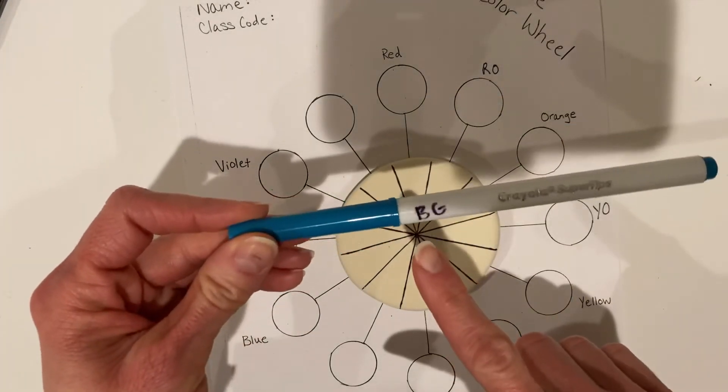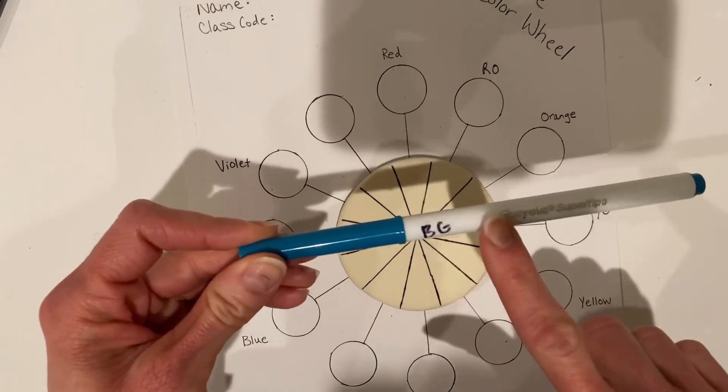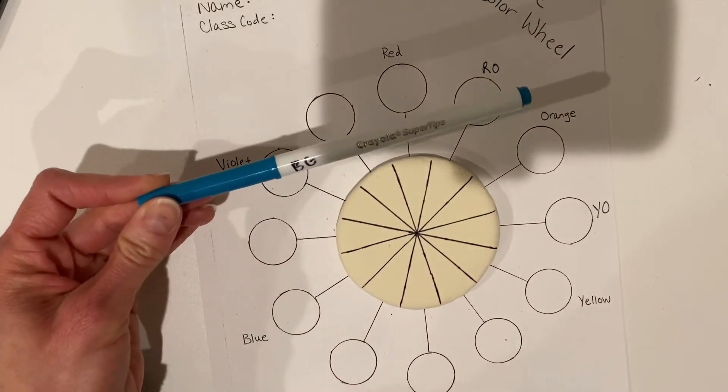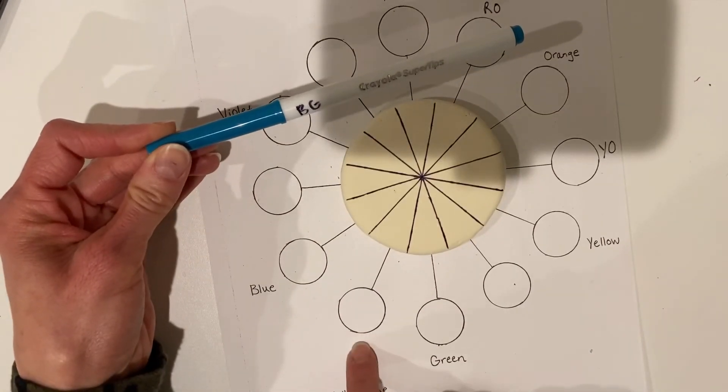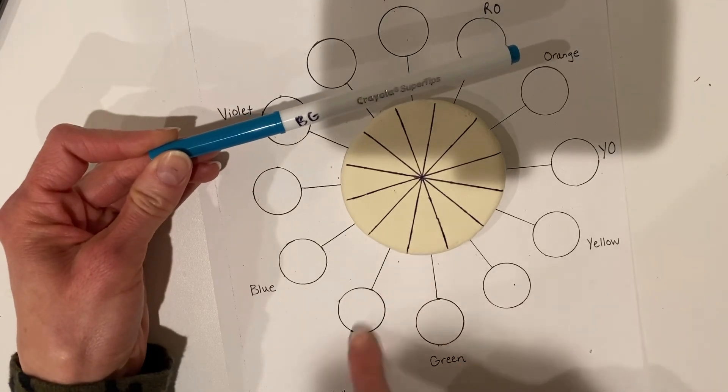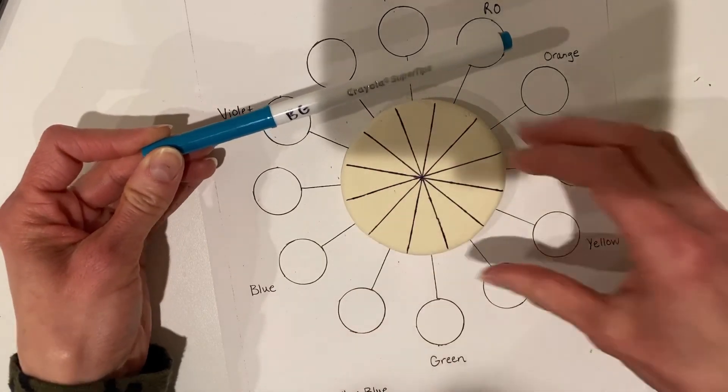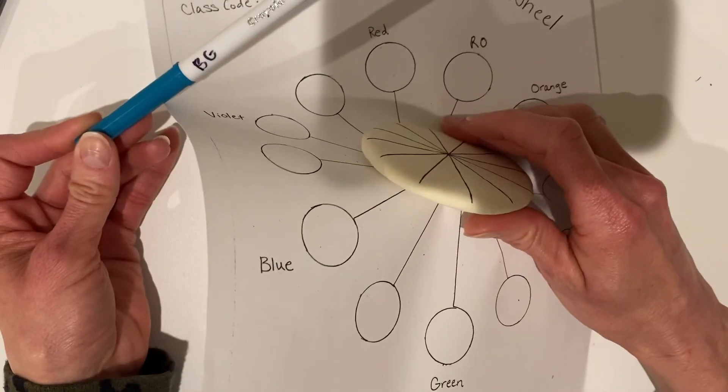So blue-green, and that would be right here—I didn't write in the B-G yet—but you would use that color for this one. All the way around. Make sure you color the edges also.